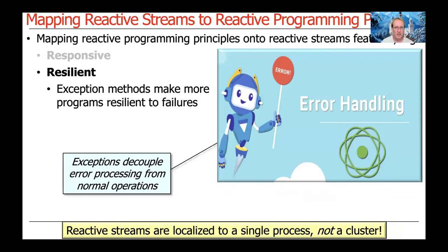With respect to resiliency, the basic idea is to have exception handling methods that automatically receive control transfer if an exception occurs, so you can do something in response. The idea is to prevent problems from propagating outside of the context in which they are caught or discovered. Always keep in mind that reactive streams are localized to a single process, not a cluster — you're just making sure the process doesn't crash.